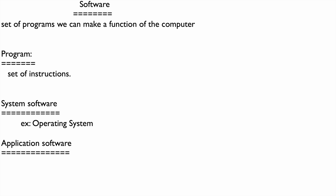For example, we can perform a particular task, we can play games, or we can use typing software. These are all examples of application software.